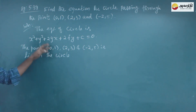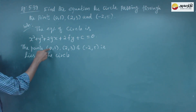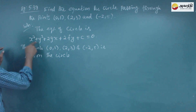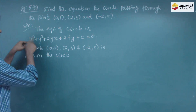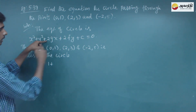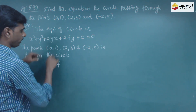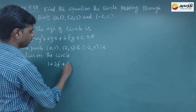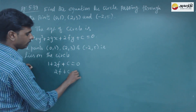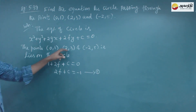We will substitute the three points into the equation. Substituting the point (0,1): 0² plus 1² plus 2g(0) plus 2f(1) plus c equals 0. That gives us 2f plus c is equal to minus 1. This is equation number 1.